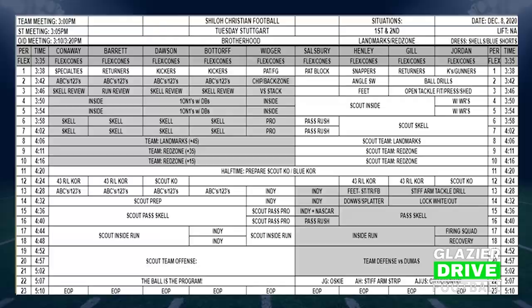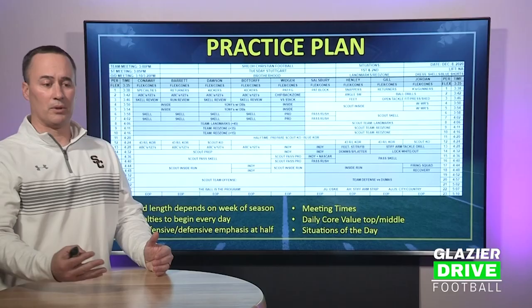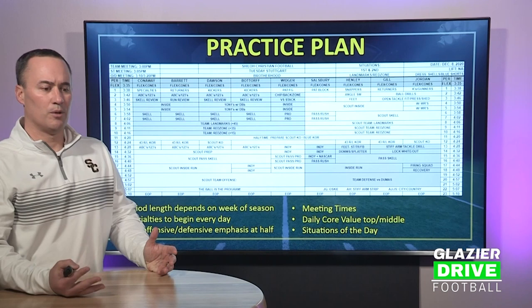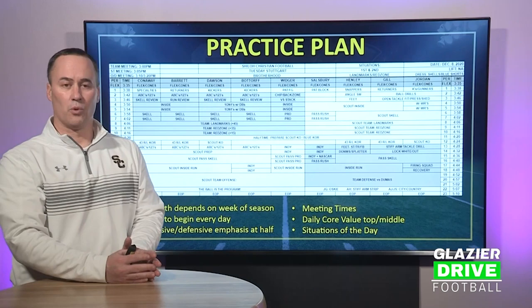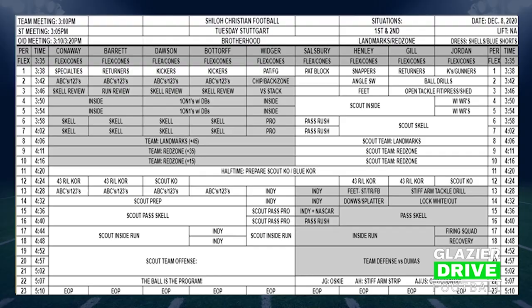First I want to go over our practice plan. You can see here we have a 23-period practice plan. The first thing I always notice with practice plans are the segments, the periods, and the amount of time used for each period. Typically the first three weeks of the season we're on a five-minute period practice plan; once we get into conference we move to four-minute periods. We want our specialties practiced every day.